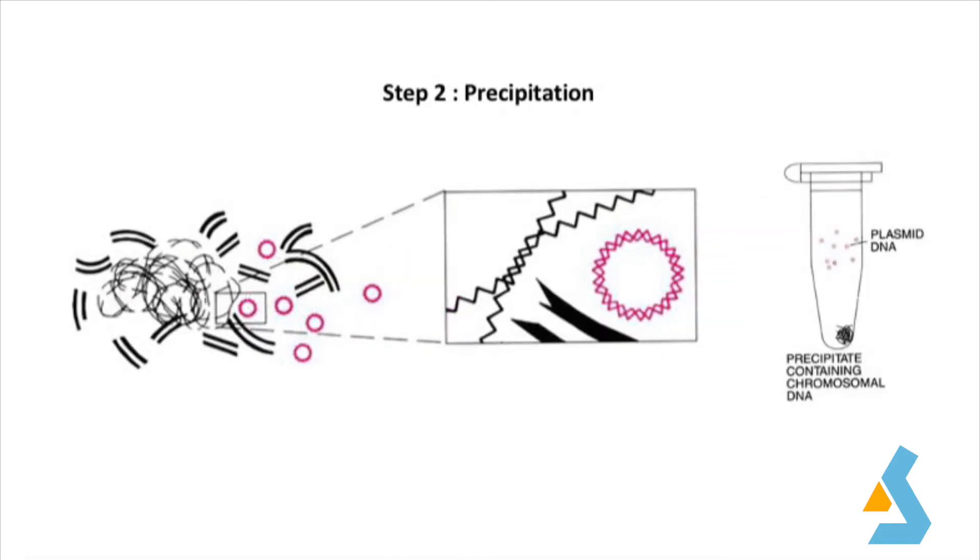Second step is precipitation. Following the lysis, the DNA is freed from the nucleus but it is now mixed with mashed up cell parts. When you apply the centrifuge, cellular debris except the DNA will precipitate. So precipitation separates DNA from the cellular debris.